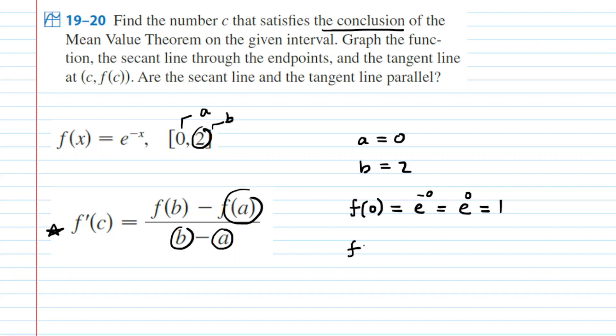And then our f of b would be f of 2 in this case, and that would equal e to the power of negative 2, and for now we'll just leave it in that form.